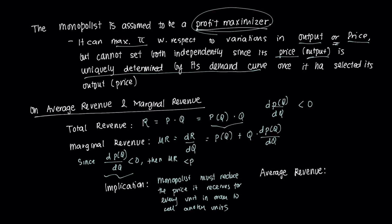Average revenue, as you recall from perfect competition, is essentially equal to revenue over Q. In our case, that's going to be equal to P. That average revenue curve is the monopolist's demand curve.